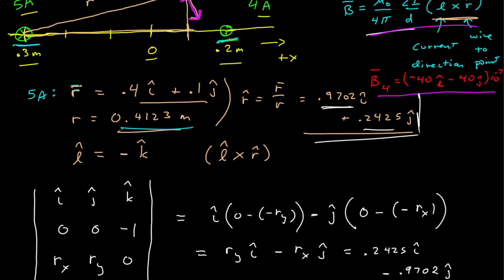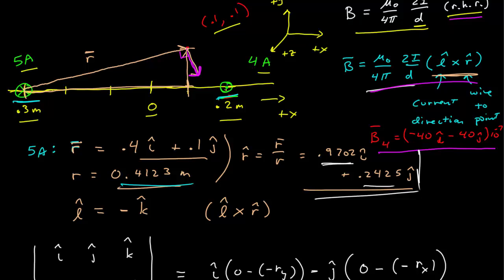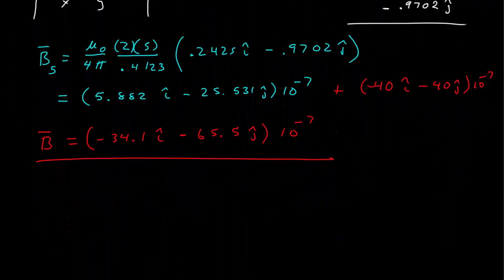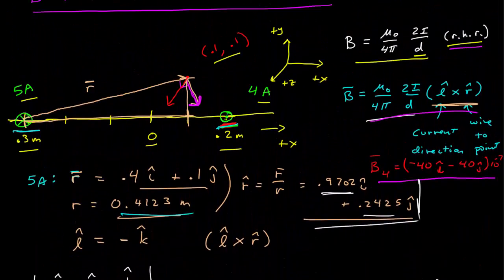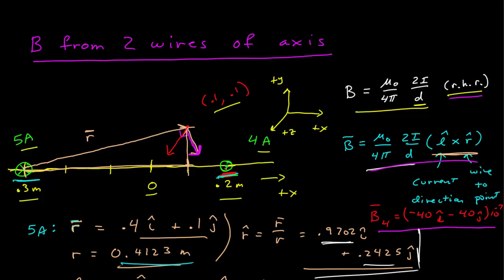Does this make sense? Yes — both wires contribute mostly in the negative y direction, and the 5-amp wire has a stronger field whose larger negative x component cancels the positive x component from the other wire, giving a resultant with both negative x and y components. This is a calculation of magnetic field from two wires off axis using the component form. You can also use the right-hand rule geometrically, but it's good practice to use unit vectors, calculate them, and evaluate their cross products.